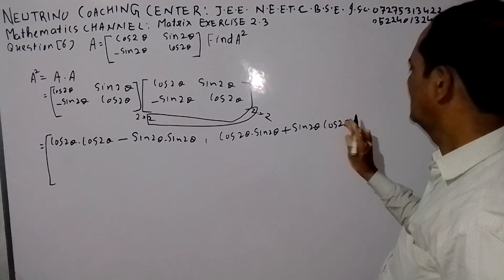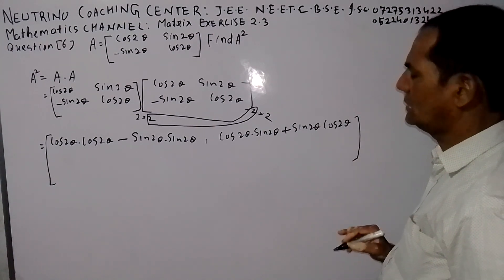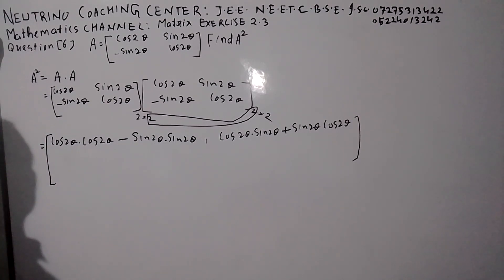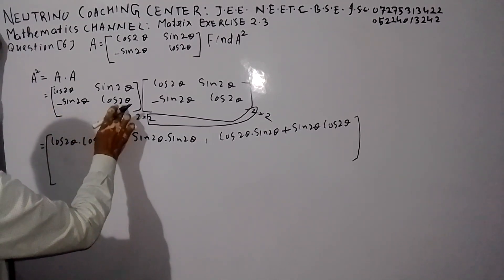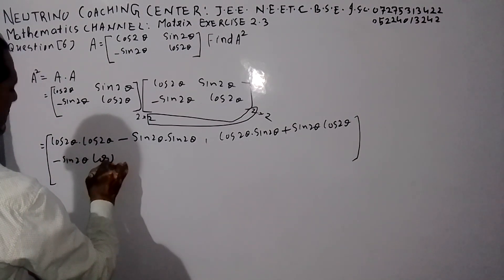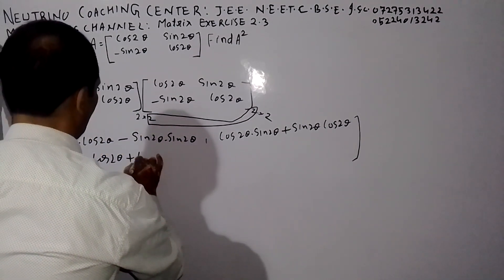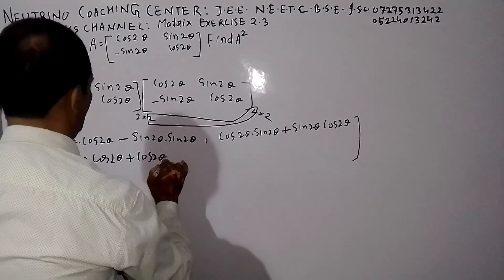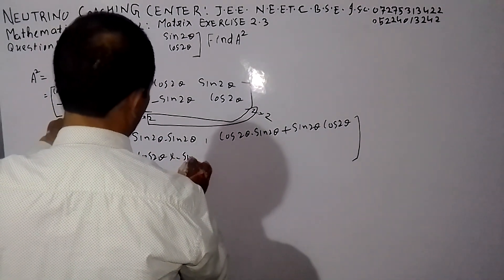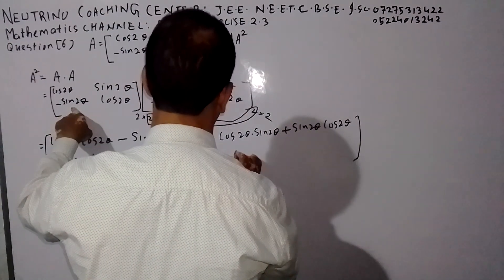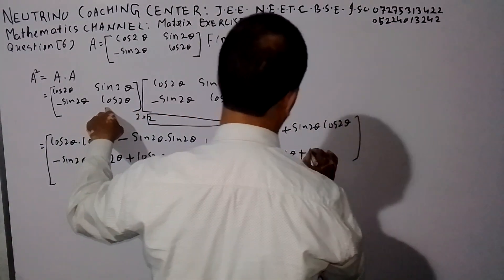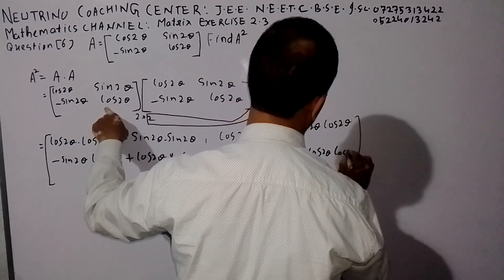Now for the second row: second row, first column gives minus sin(2θ) into cos(2θ). Then we have cos(2θ), and using sin: minus sin(2θ), minus sin(2θ), plus cos(2θ), cos(2θ).